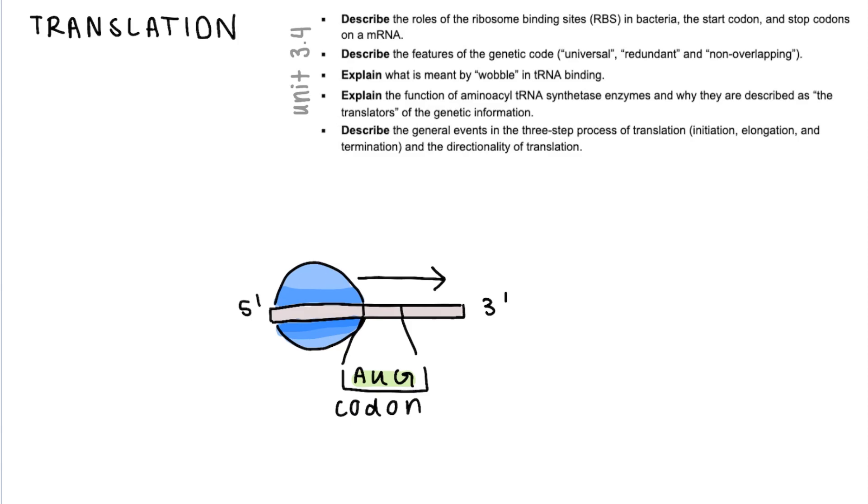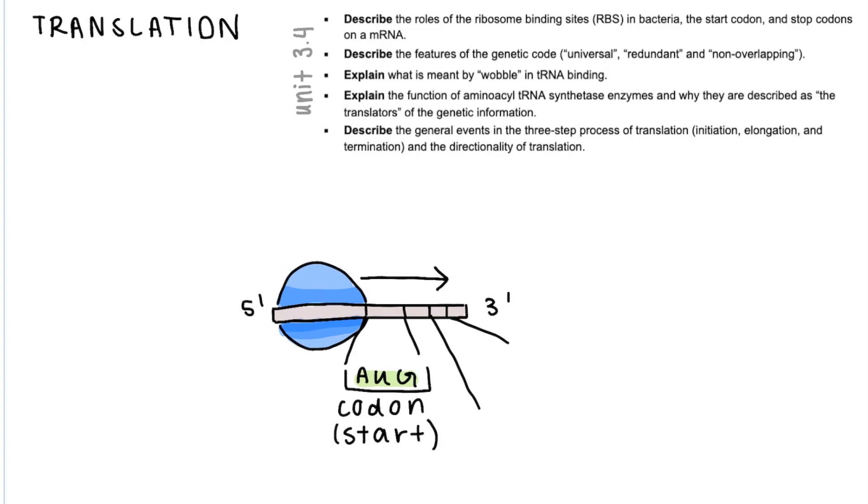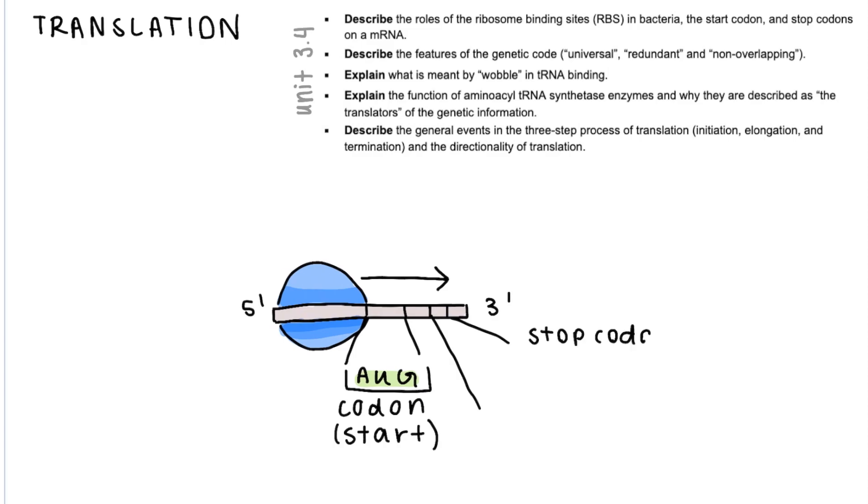So from when it recognizes the start codon, the rRNA is going to travel down the mRNA until it encounters a stop codon which is another collection of three base pairs: UAA, UAG, or UGA. So when one of these is encountered, the rRNA dissociates from the mRNA and the protein has been completed.